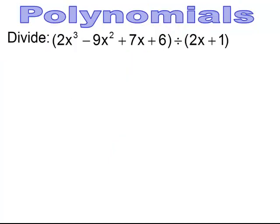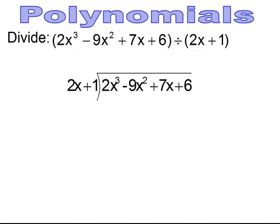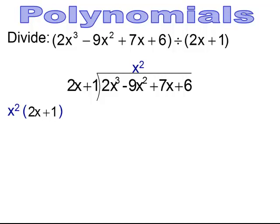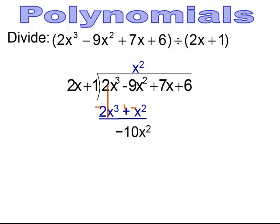Pause and try. You set it up: 2x plus 1 being divided into 2x to the third minus 9x squared plus 7x plus 6. You're only focused on that 2x to the third — what do you multiply 2x by to get 2x to the third? You need to multiply by x squared. Take x squared and distribute it all the way through 2x plus 1. You end up with 2x to the third plus x squared. The next step is to change the signs or distribute that negative, changing the signs of everything.